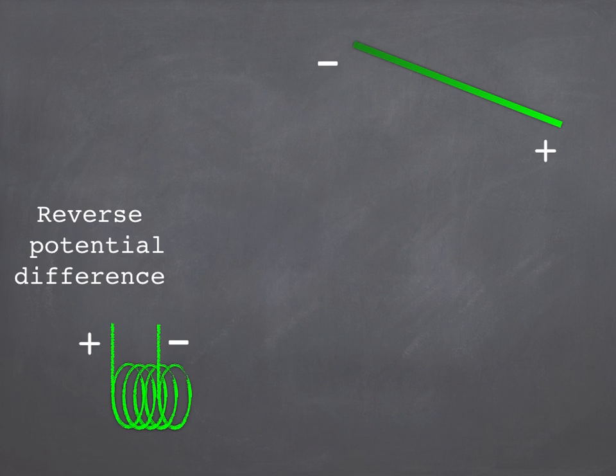They can also ask you how you'd reverse the potential difference. How you'd make the opposite end of the conductor positive. And the way to do that is again pretty straightforward to be honest.